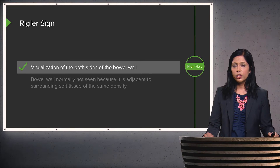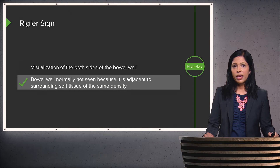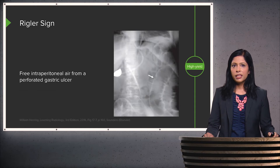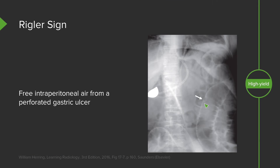The Riggler sign is visualization of both sides of the bowel wall and is an important sign of free air. The bowel wall is normally not seen because it is adjacent to surrounding soft tissue of the same density. However, if you have air on both sides of it, you can now see the bowel wall. This example of the Riggler sign is from free intraperitoneal air due to a perforated gastric ulcer — you can see the bowel wall, air within the bowel, and air outside of the bowel.